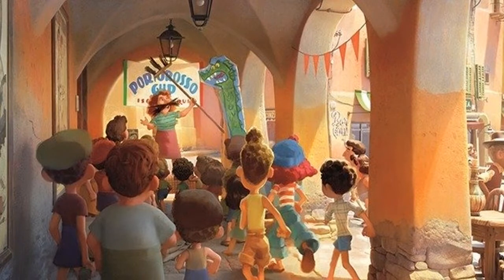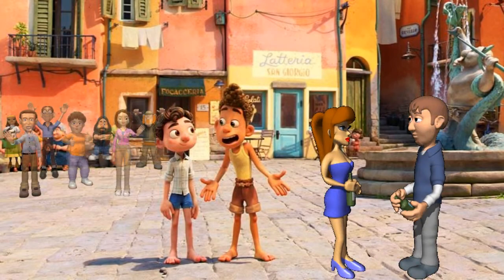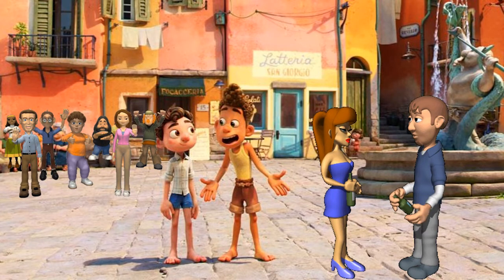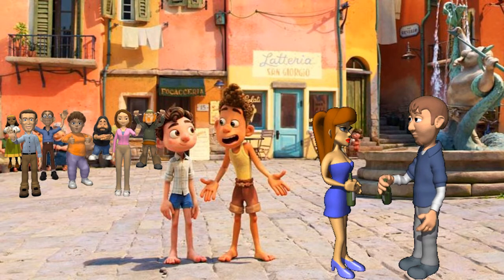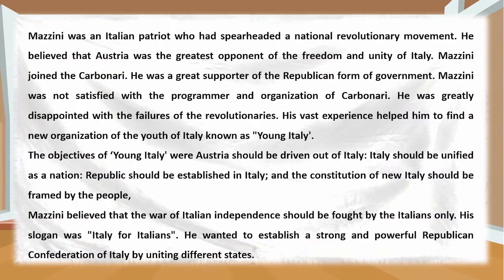Mazzini was an Italian patriot who had spearheaded a national revolutionary movement. He believed that Austria was the greatest opponent of the freedom and unity of Italy. Mazzini joined the Carbonari and was a great supporter of the republican form of government. However, Mazzini was not satisfied with the programme and organization of the Carbonari, and was greatly disappointed with the failures of the revolutionaries.